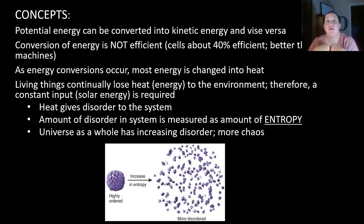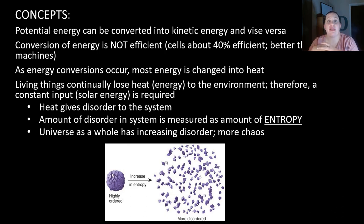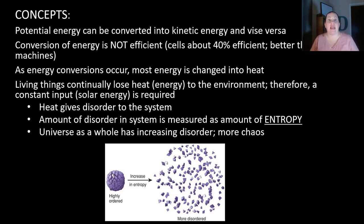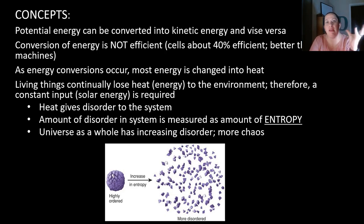When heat is released into the environment, it gives disorder to a system. The amount of disorder in a system is measured as its entropy. The universe as a whole is moving towards disorder — more chaos. It takes a lot of work to keep things organized. Think about your backpack or your house — you work hard to get it cleaned and organized, but how long does it take to go back to being messy? It hardly takes any time or energy, because the world is moving towards chaos.